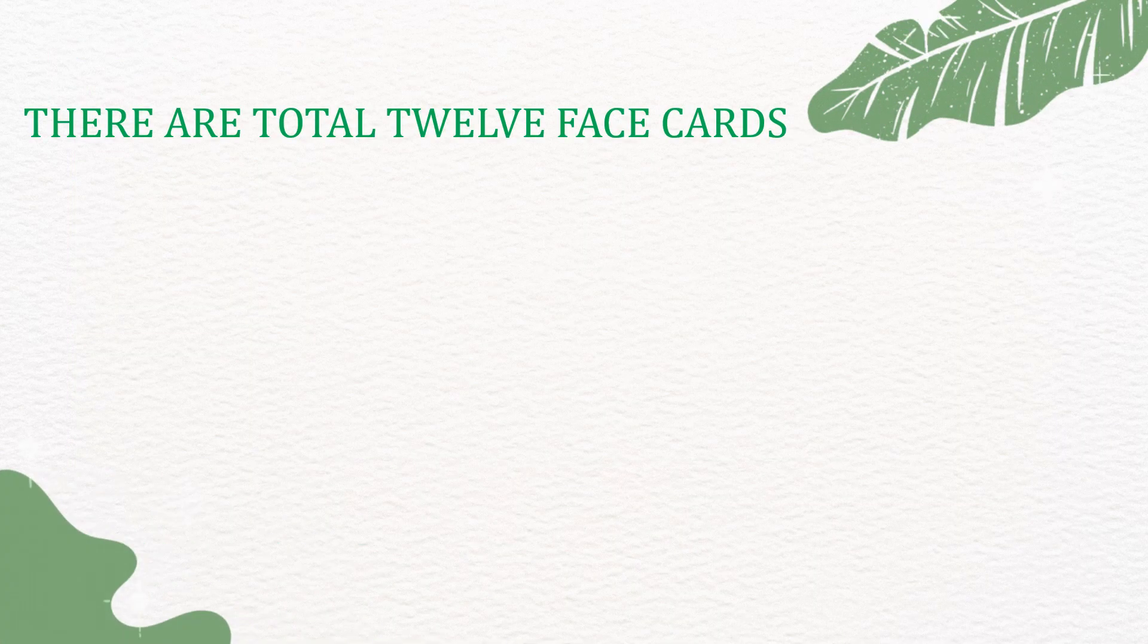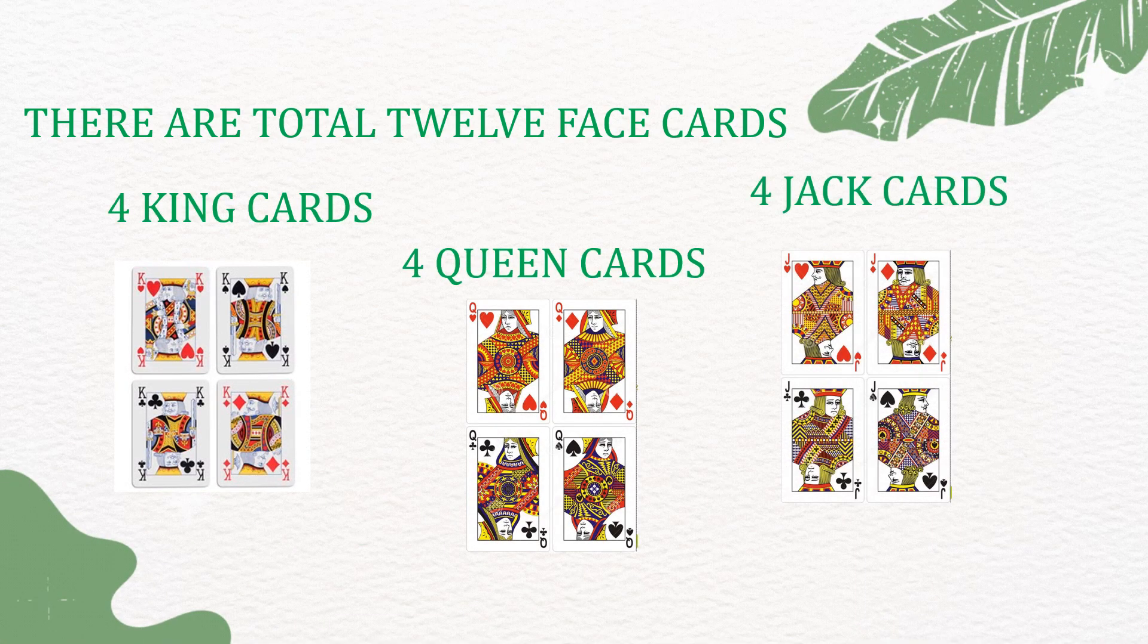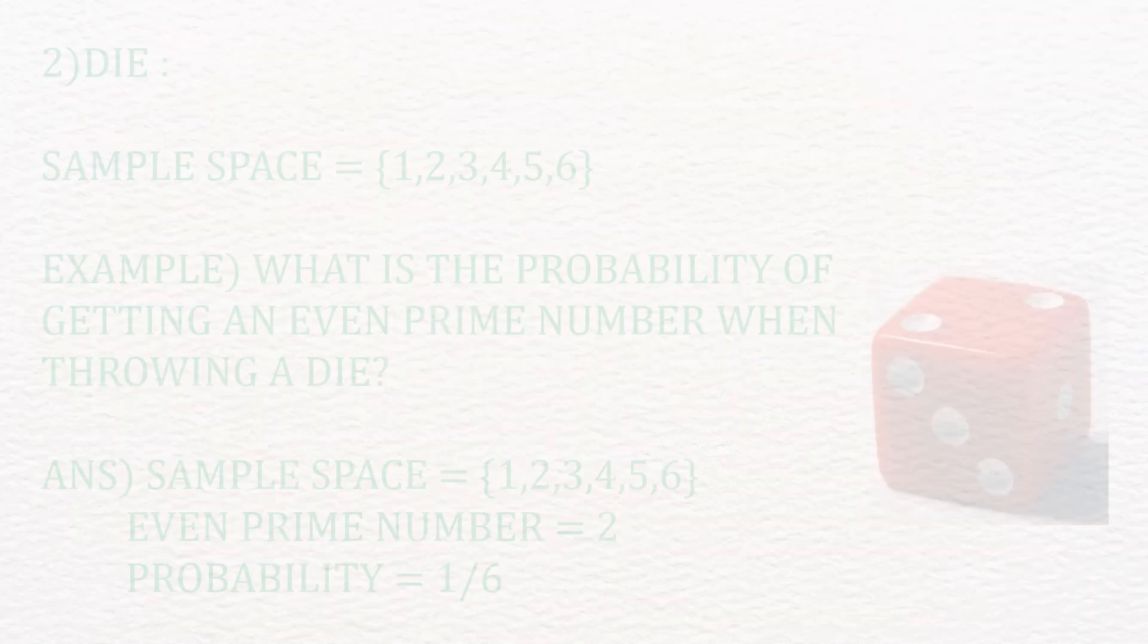In a 52 card deck, there are total 12 face cards: 4 king cards, 4 queen cards and 4 jack cards.